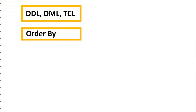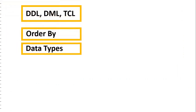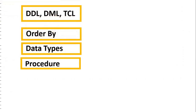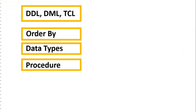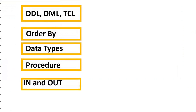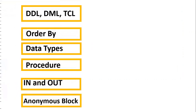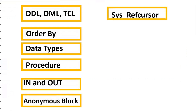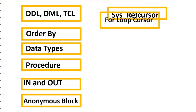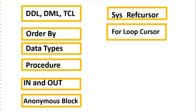You should also know ORDER BY clauses for sorting, data types like NUMBER, VARCHAR, CHAR, and DATE. You should know what a procedure is, how to write a procedure, and how to execute a procedure — including IN and OUT parameters. An anonymous block is used to execute a procedure. A system cursor is used to store a query result set, and a FOR loop cursor is used to iterate over a number of results.